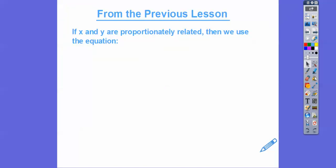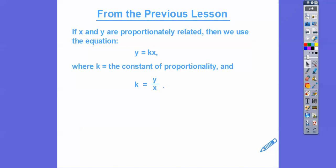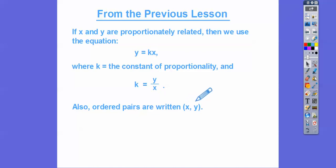Let's recap from the last lesson. If x and y are proportionately related, then we can use the equation y equals kx, where k is called the constant of proportionality. We'll dive more into that in just a little bit. And k equals your y value over your x value. So if we have an ordered pair, it's always written with x first — x comes before y in the alphabet — so it's always written as x comma y. It's this number over this number to get k.